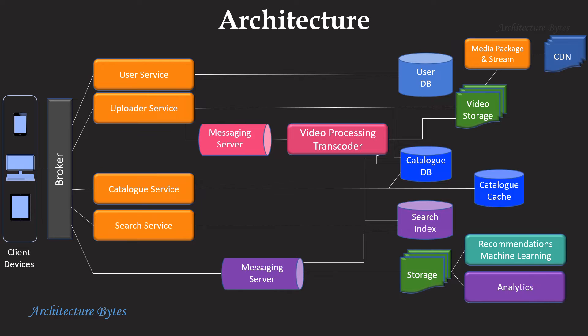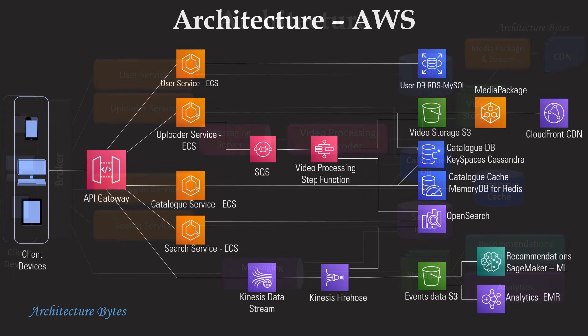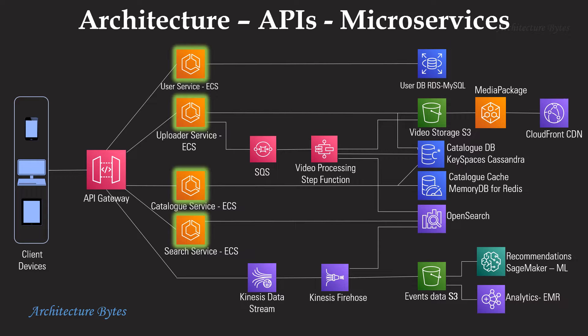This is the overall architecture where you can see interactions between various components. Services are modeled as microservices. We will understand these in more detail soon. Microservices are deployed in containers orchestrated by ECS, Elastic Container Service.